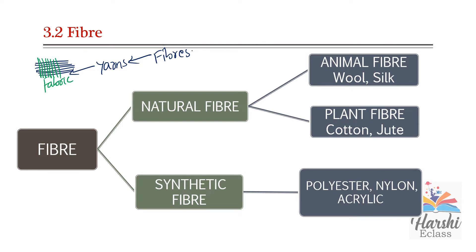Plant fibers — examples are cotton and jute. Cotton comes from the fruits of the cotton plant, and jute comes from the stem of the jute plant.